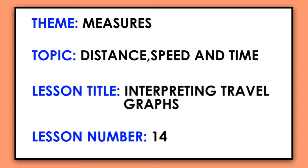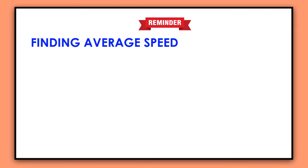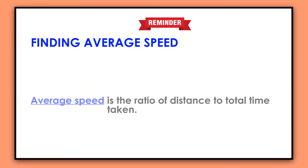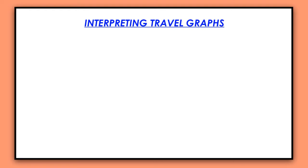Before we continue, let's remind ourselves what we learned in lesson 13. It was about finding average speed, and we said average speed is the ratio of distance to total time taken. In case you didn't view that video, I advise you to visit our platform so that you catch up with today's lesson. Our lesson today is about interpreting travel graphs.